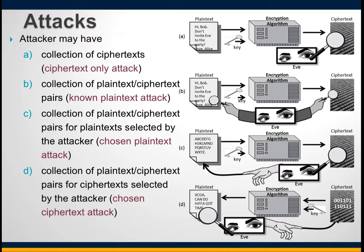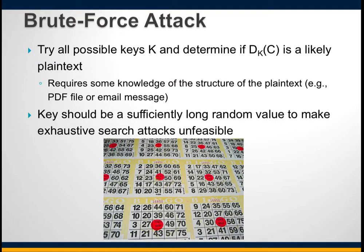In chosen-plaintext or ciphertext attacks, the cryptanalyst has the target unknowingly encrypt chosen blocks of data, then analyzes the results to determine the cryptographic key, which can then decrypt other messages. The second type of attack is a brute force attack: the goal is to try every possible key on a piece of ciphertext until some intelligible plaintext is obtained.